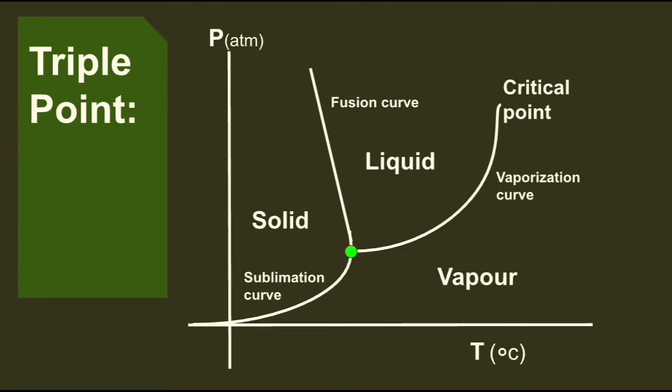Here in the phase diagram, the fusion curve separates the solid and liquid state. Similarly, the vaporization line or vaporization curve separates liquid and gaseous state, and the sublimation curve distinguishes the solid and gaseous state of a substance.